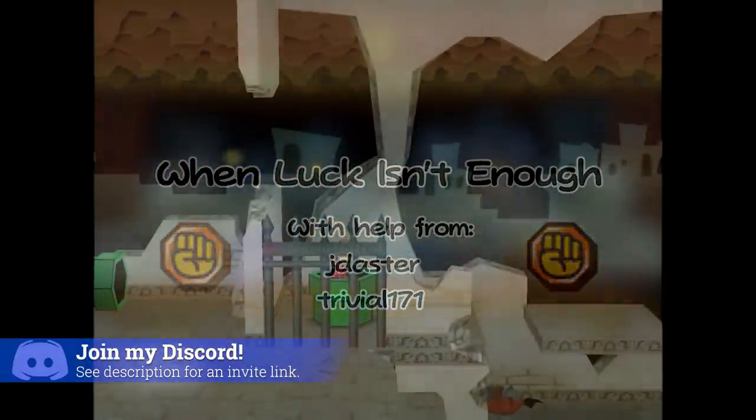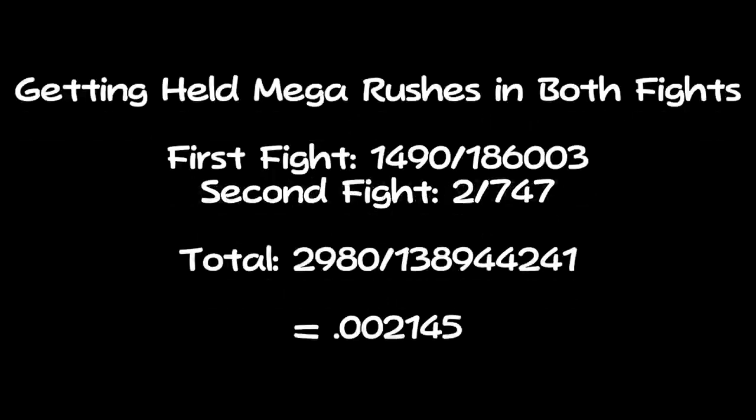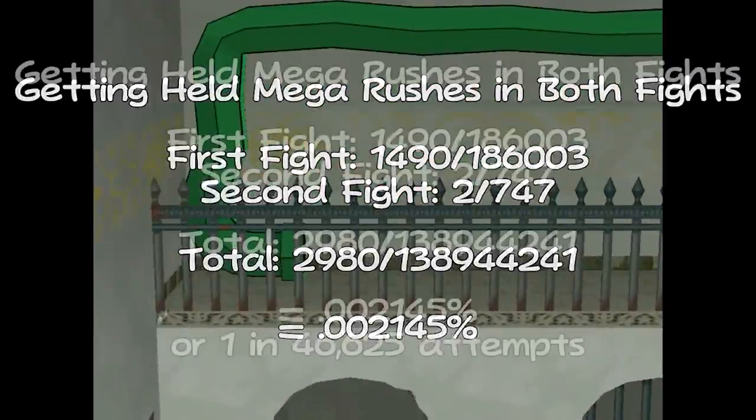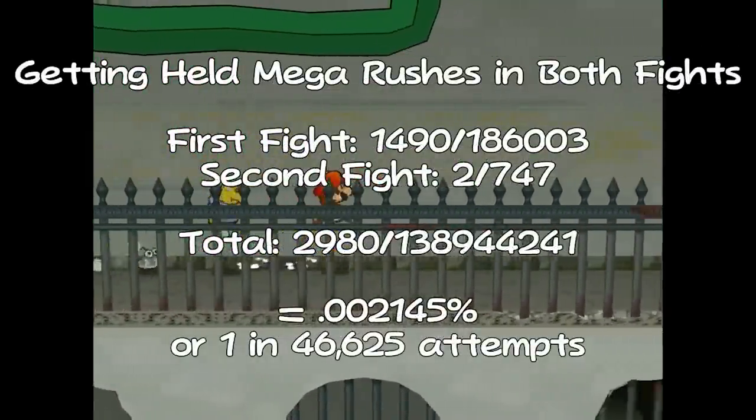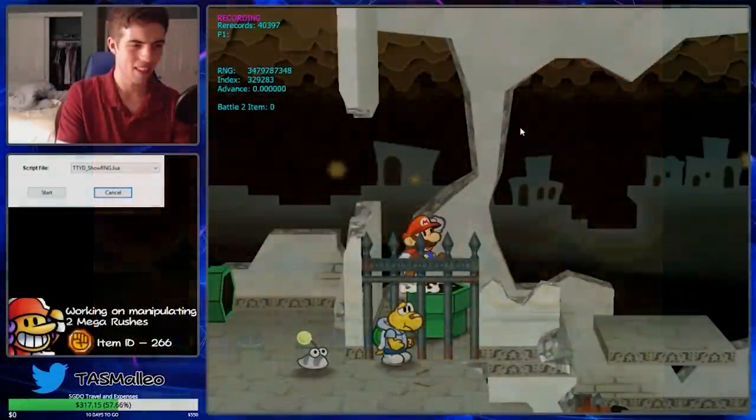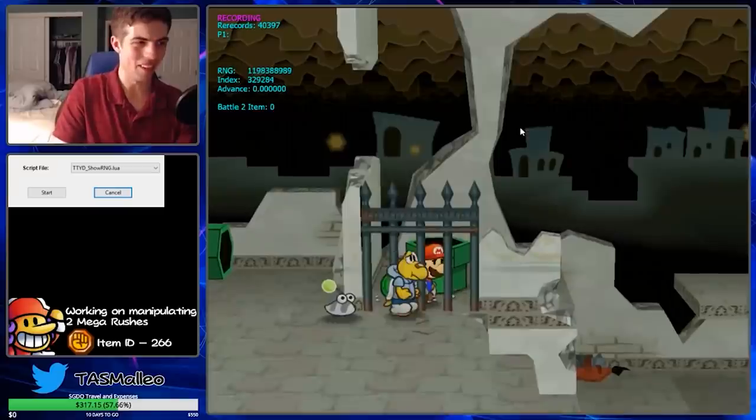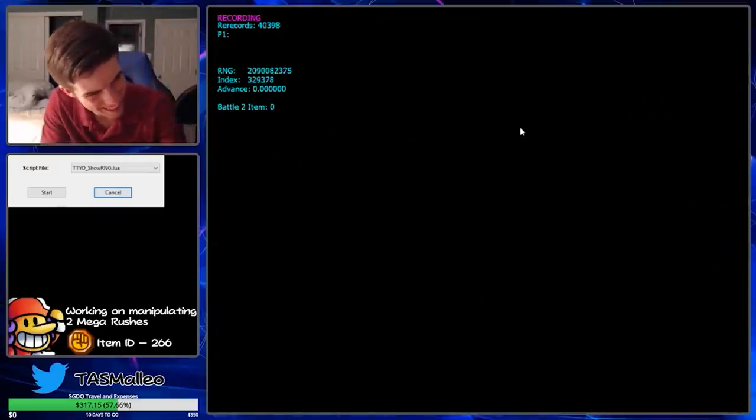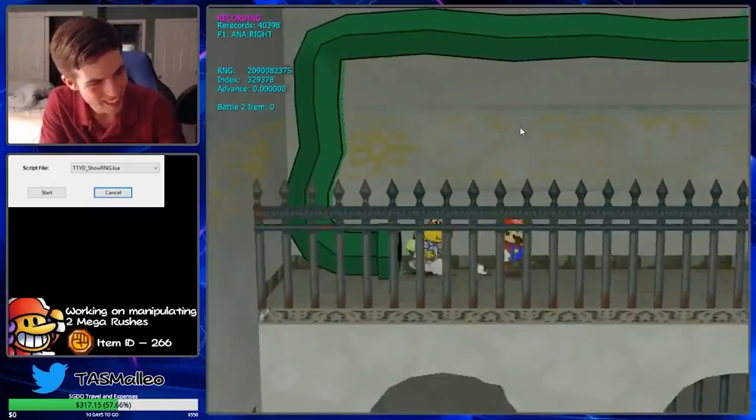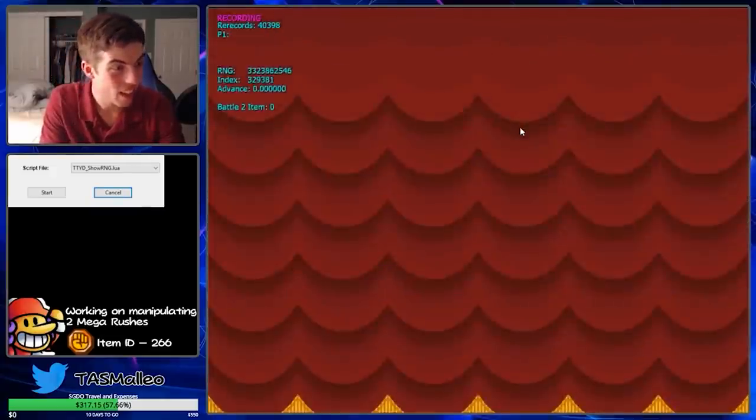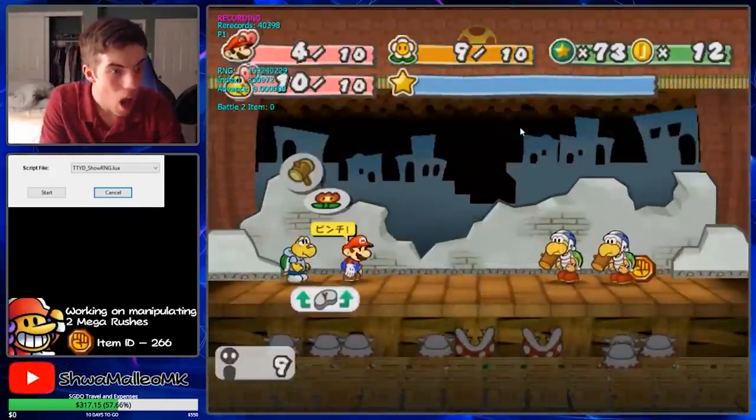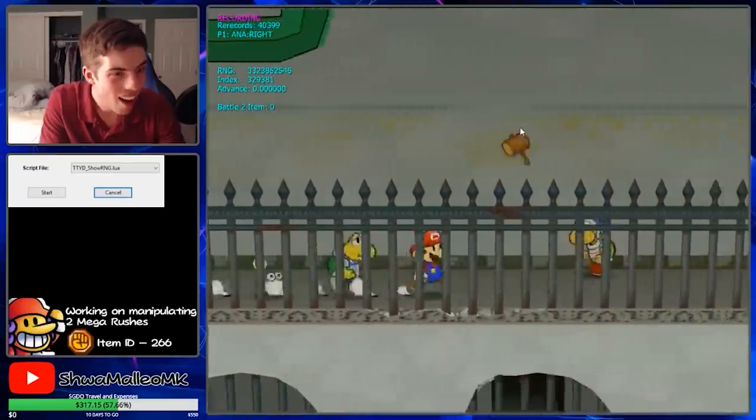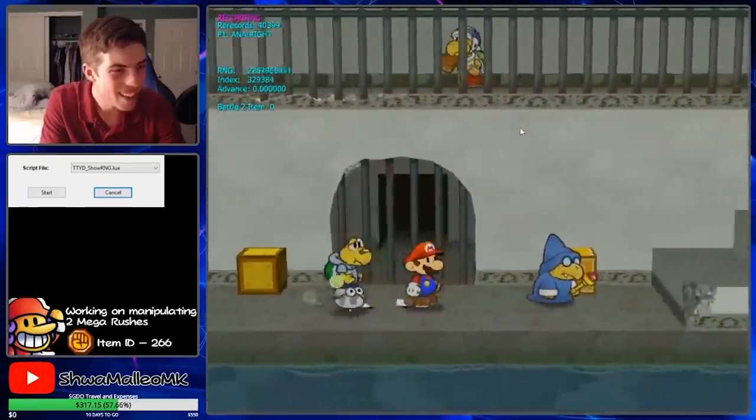Overall, it came down to a 1 in 46,000 likelihood of getting two mega rushes to appear in battle, as the randomness for both battles is determined at the same time when the room loads. Luckily, through the extensive effort of JDAster and Trivial171, we were able to reverse engineer this process and produce two successful mega rushes by wasting only two tenths of a second. This video showed some pretty interesting applications of number theory, and I'm glad it was so well received.